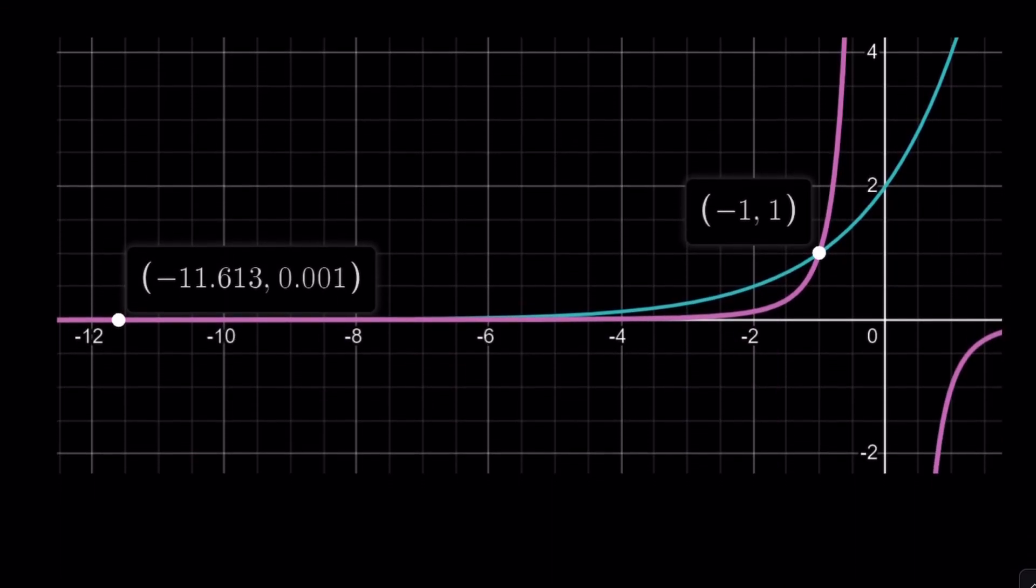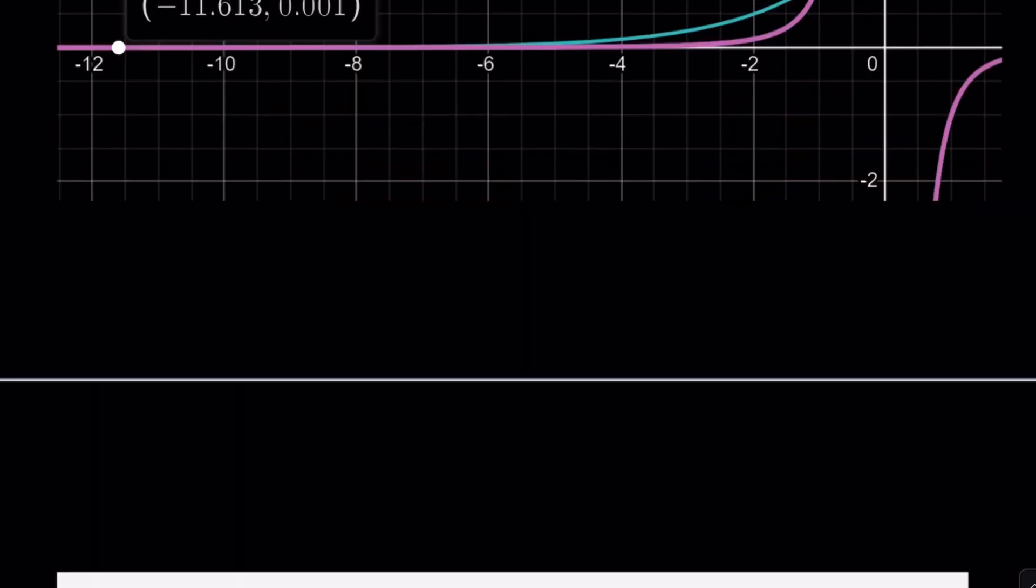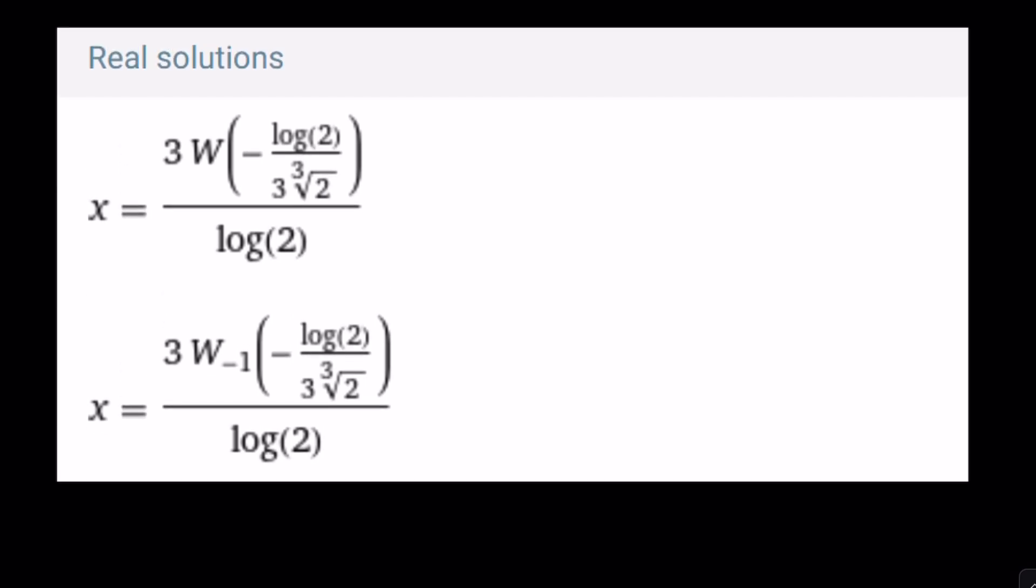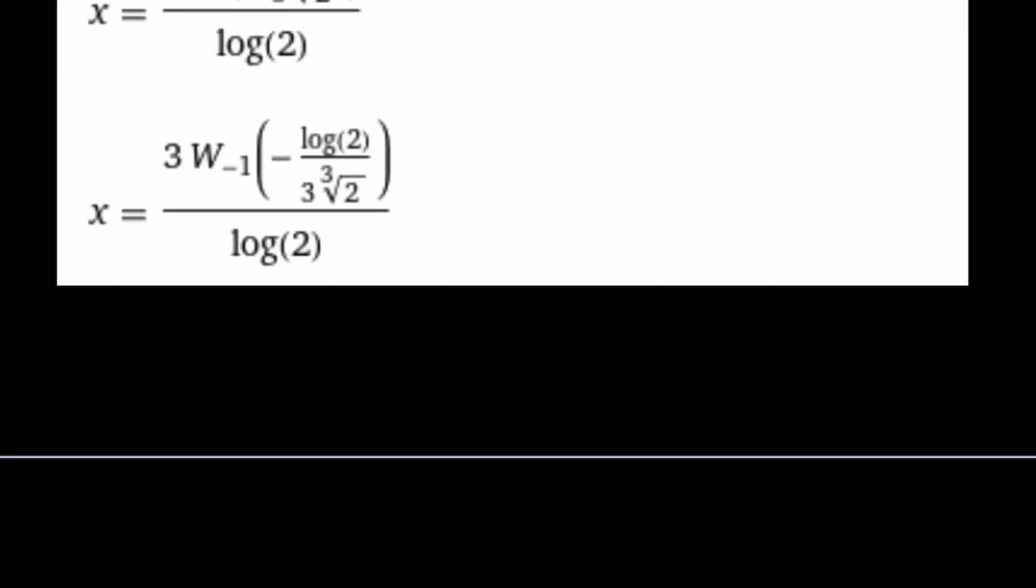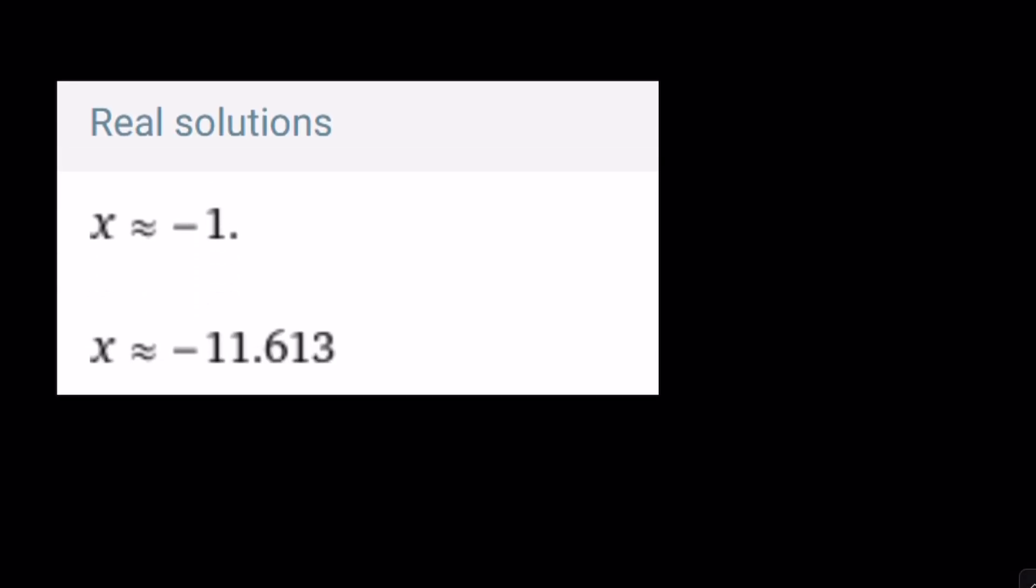By using a calculator, you are going to be able to get both solutions, and they're going to look like this. As you can see, there's two intersection points. And here's how we can express them using Lambert's W function notation. It's a little messy, but that's what it is. And here's the real solutions approximately.